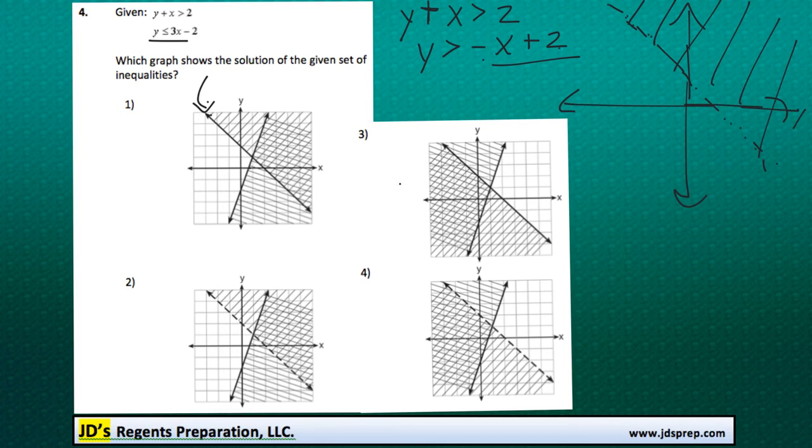Now for the other one, we've already got y isolated by itself, and it's y is less than or equal to 3x minus 2. And that's going to be the graph that goes upwards like this.